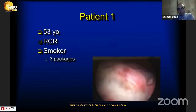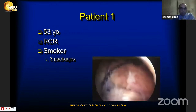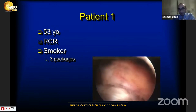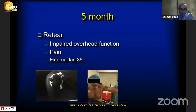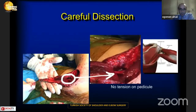I would like to show two patient examples. The first patient is a 52-year-old who underwent rotator cuff repair as the index surgery. He was a heavy smoker — three packs of cigarettes daily. At five months post-surgery, he returned with a re-tear, impaired overhead function, pain, and a positive external lag sign. We performed a latissimus dorsi tendon transfer for this patient.